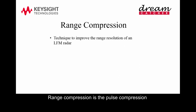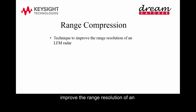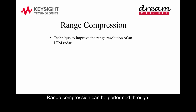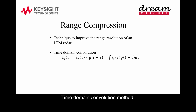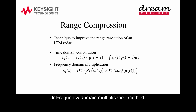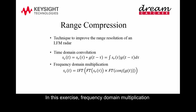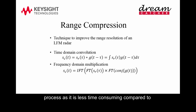Range compression is the pulse compression technique used in radar signal processing to improve the range resolution of a linear frequency modulated radar. Range compression can be performed through the time domain convolution method, which involves the convolution of the received signal S with a reference signal G, or the frequency domain multiplication method, where functions are Fourier transformed and multiplied in the frequency domain. In this exercise, the frequency domain multiplication method is selected for the range compression process, as it is less time consuming compared to the time domain convolution method.